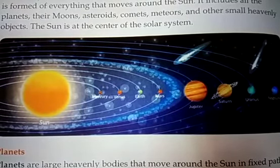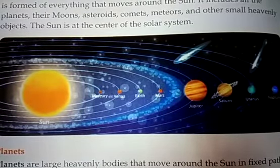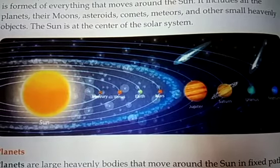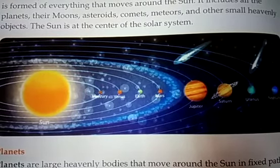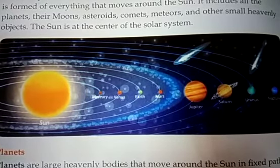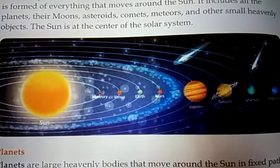It includes all the planets, their moons, asteroids, comets, meteors and other small heavenly objects. The sun is at the center of the solar system.